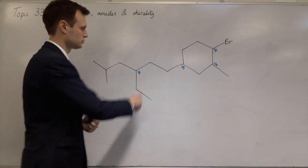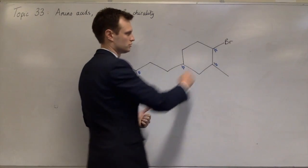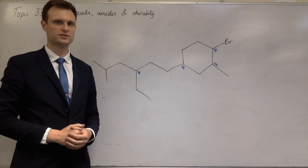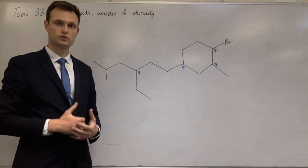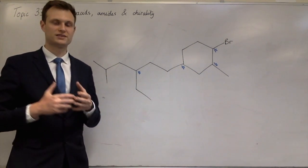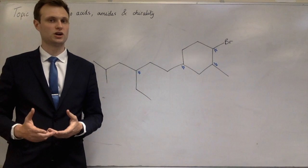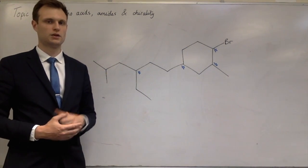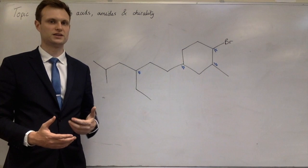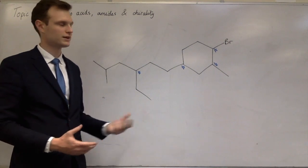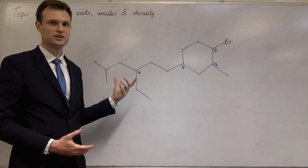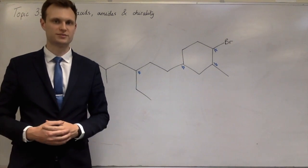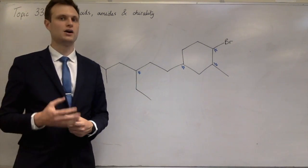Each chiral centre gives rise to two different optical isomers, so you might expect two times two times two times two — 16 different optical isomers. But those questions are rare. Normally, if you're asked to calculate the number of optical isomers, there'll be maybe one or two chiral centres. I'm going to quickly go through the other question type I've seen come up about chirality: first, counting chiral centres; second, working out how many different optical isomers there are of a compound.